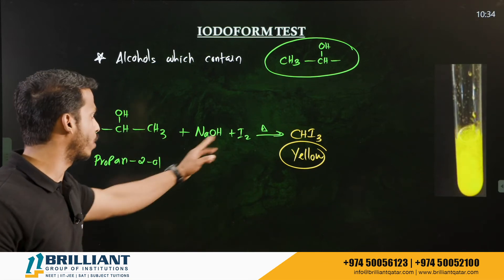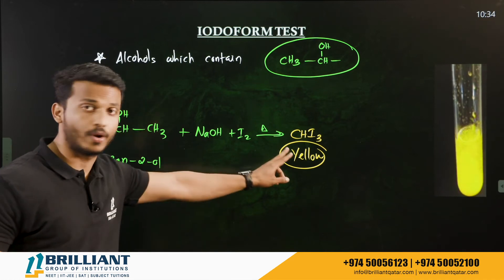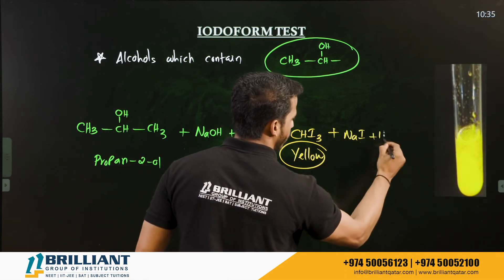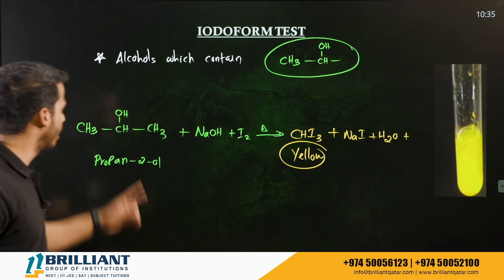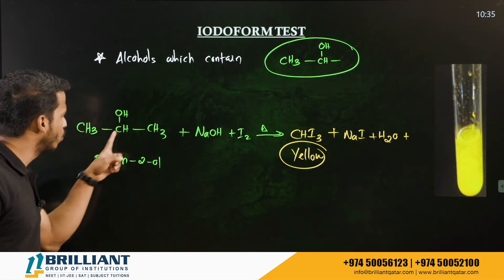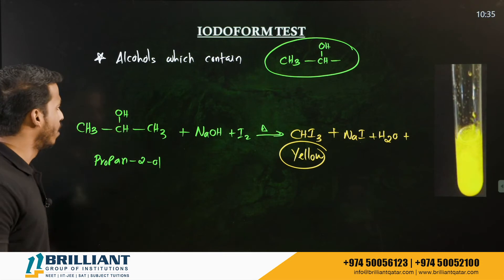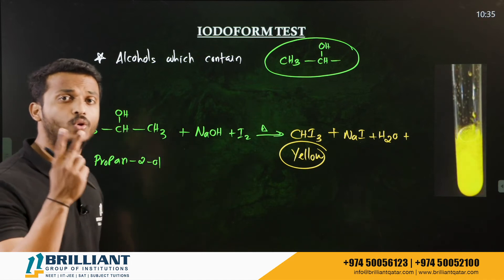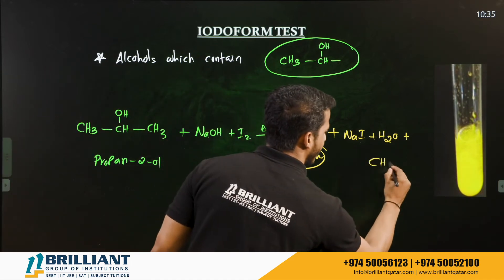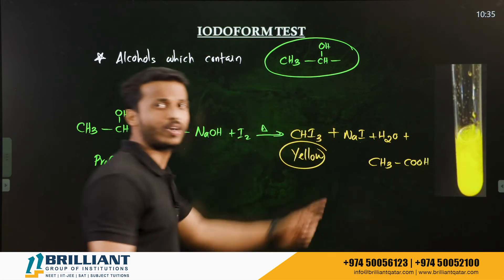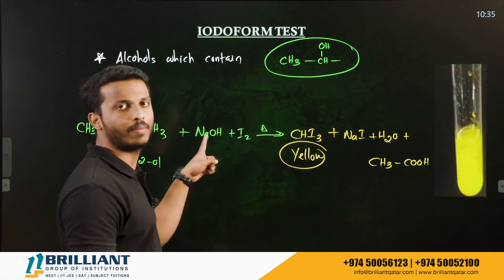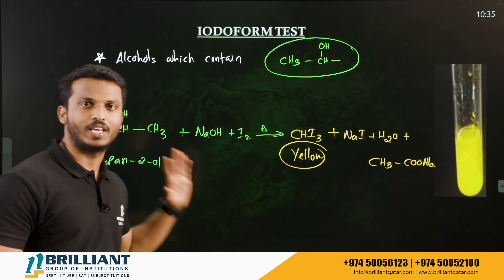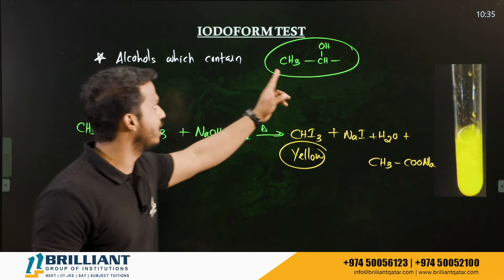When treated with NaOH and iodine and heated, the products are iodoform (CHI₃), sodium iodide (NaI), water, and a sodium salt of an acid. Since two carbons remain after forming iodoform from propan-2-ol, the remaining part forms a two-carbon acid — CH₃COONa (sodium acetate) — because sodium replaces the hydrogen.